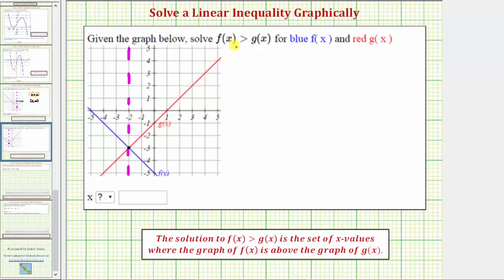Which means f of x equals g of x when x equals negative two, but we're trying to solve f of x greater than g of x. So now we need to determine where the graph of f of x, the blue line, is above the graph of g of x, the red line.